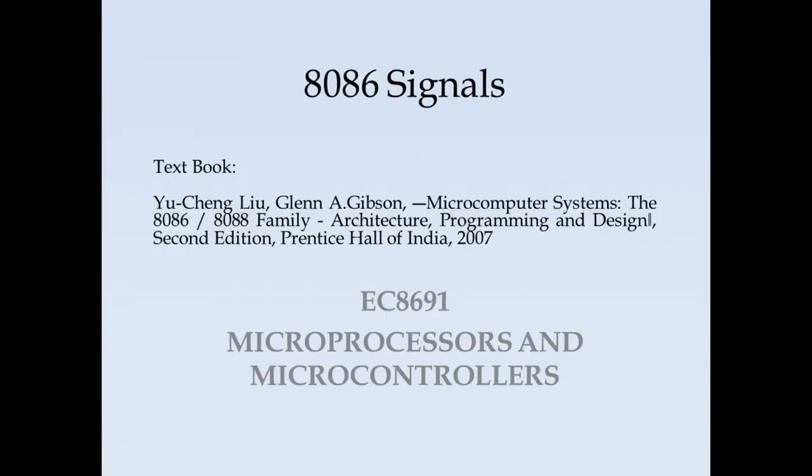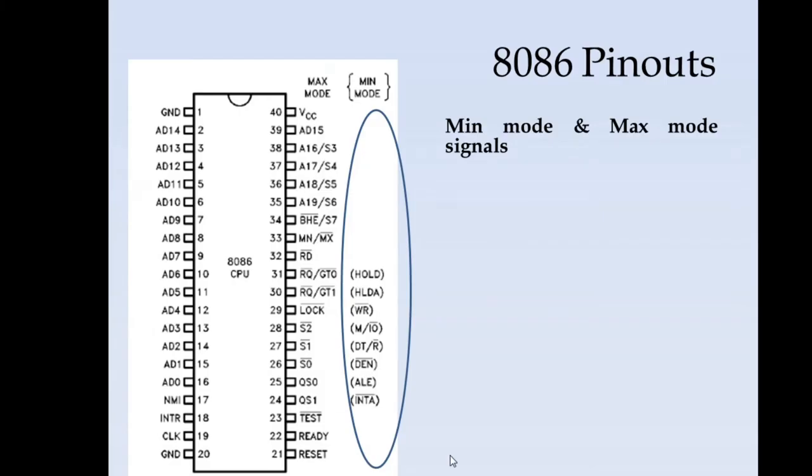In this video we will see the different signals for 8086 microprocessor. This indicates the pin diagram for 8086 microprocessor. It is a 40 pin IC in which the pins have different values under different configurations. These particular pins have different functionality in the minimum mode and in the maximum mode.